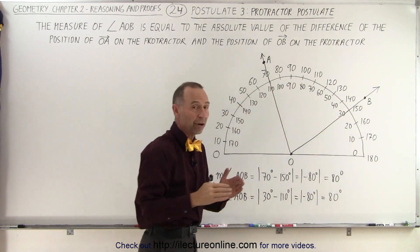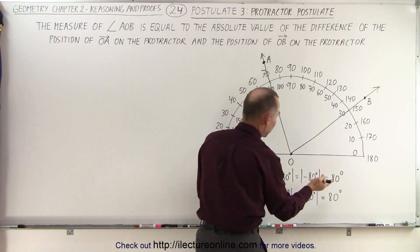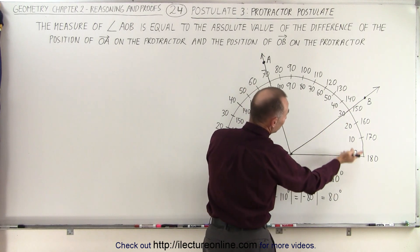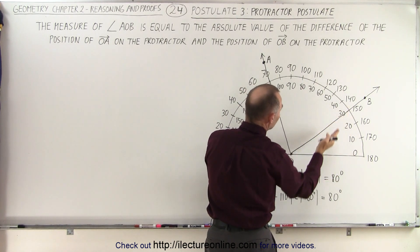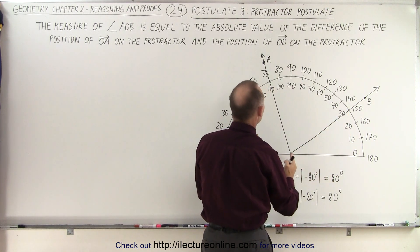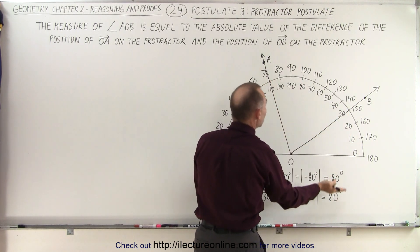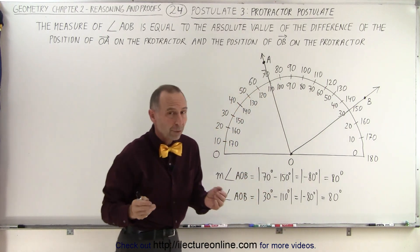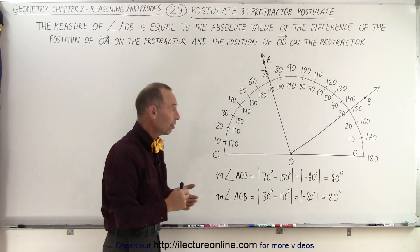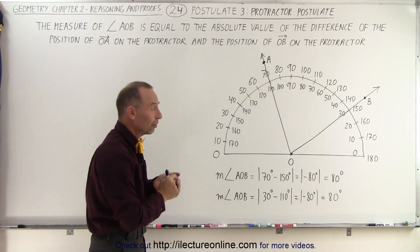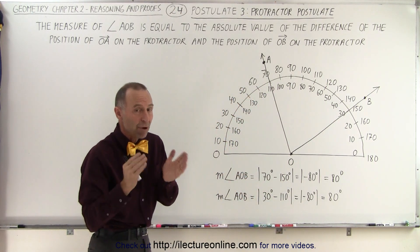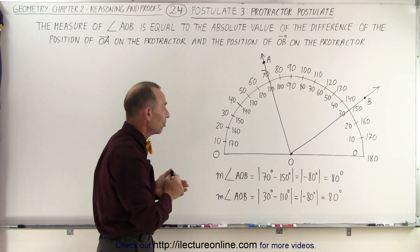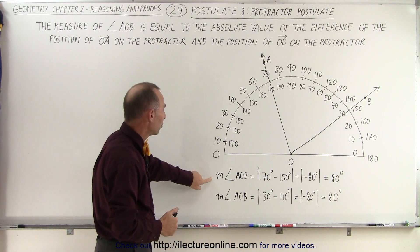But if you start from the other direction, you can see that ray OB has a measure of 30 degrees, and the ray OA has a measure of 110 degrees. But it doesn't matter which direction you start from, you can see that the measure of the angle by the definition will be exactly the same.